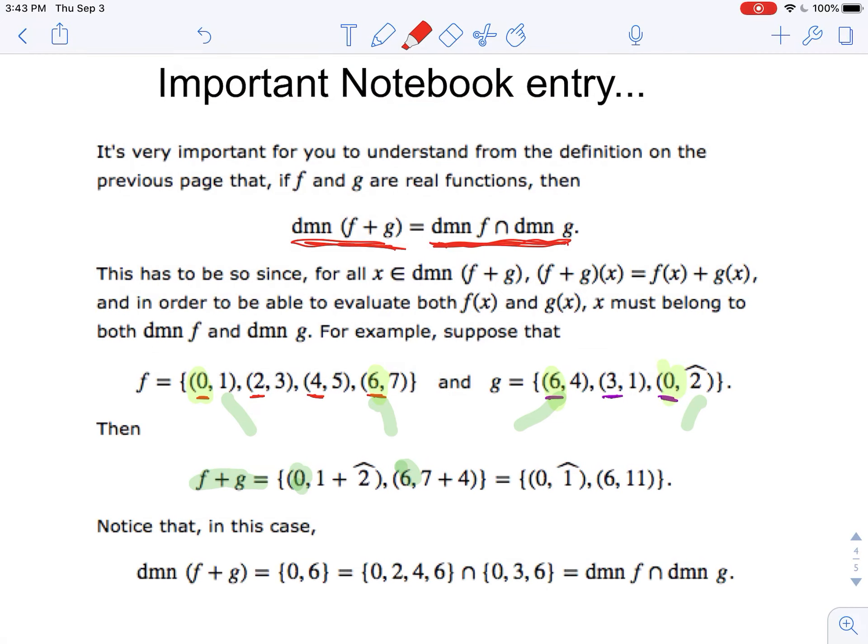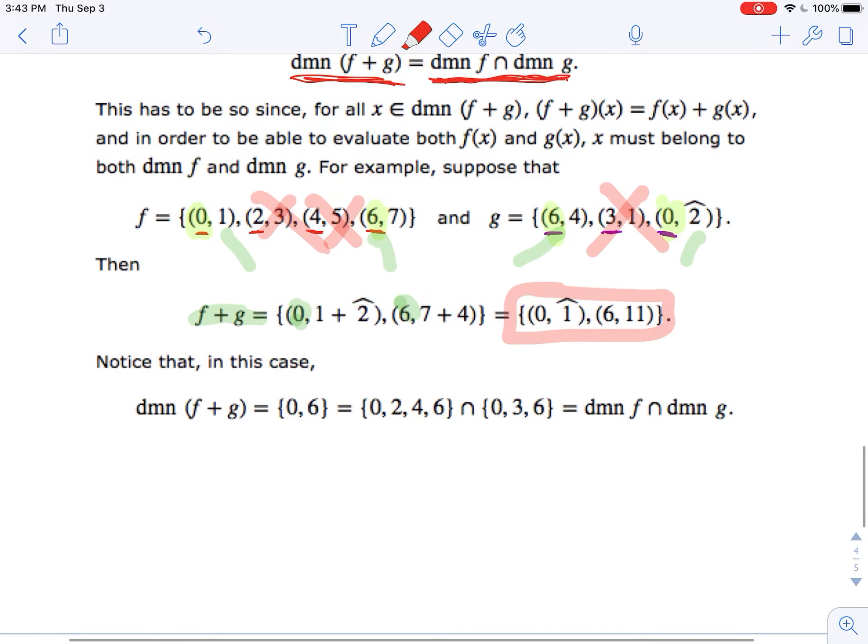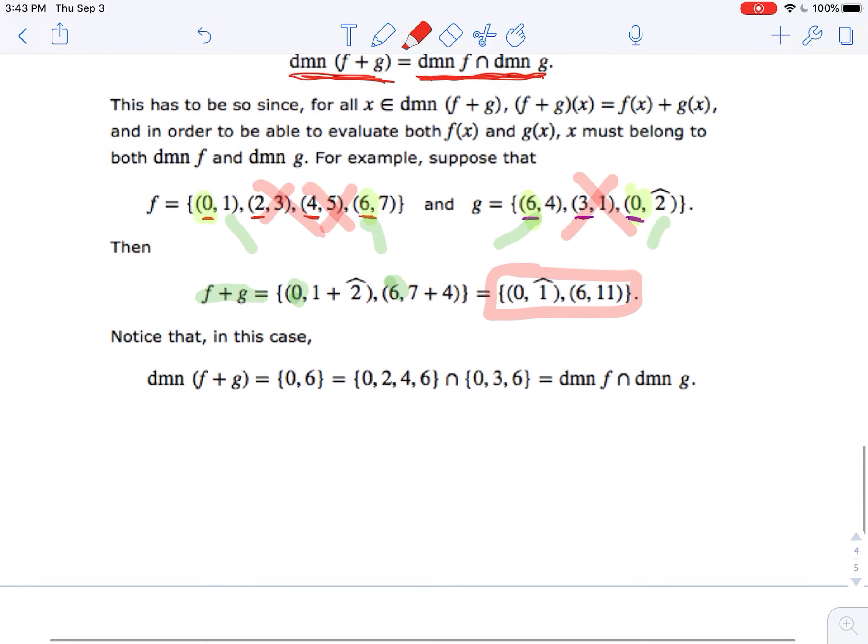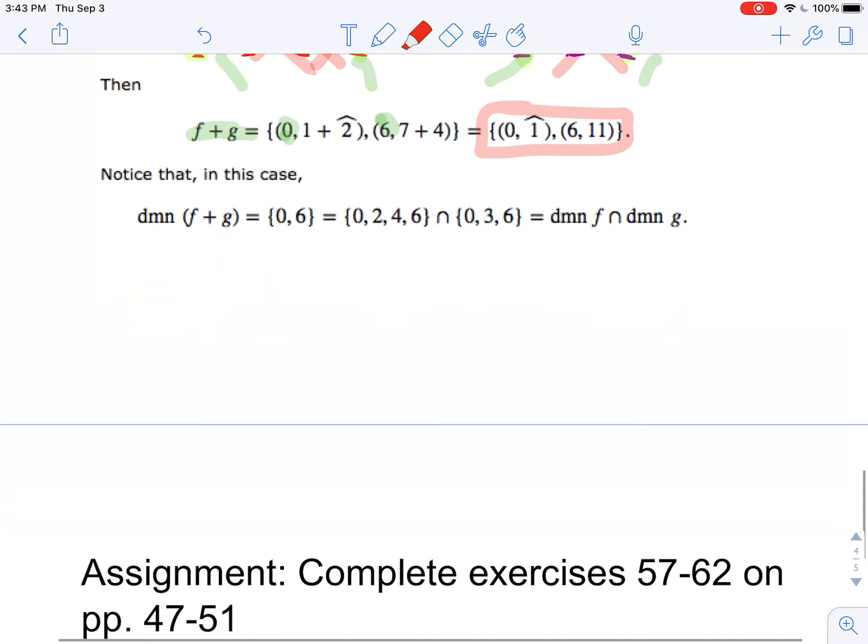Notice that the two comma three, four comma five, three comma one, these wind up getting knocked out. Important that you understand that. The domain of F plus G in this case can only be composed of the intersection of those values. And if it's F plus G, then that means I'm adding their outputs together. If it's F times G, I'm going to multiply them. Hope that makes sense.